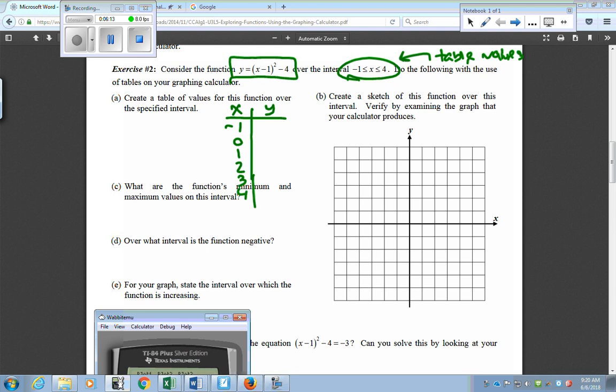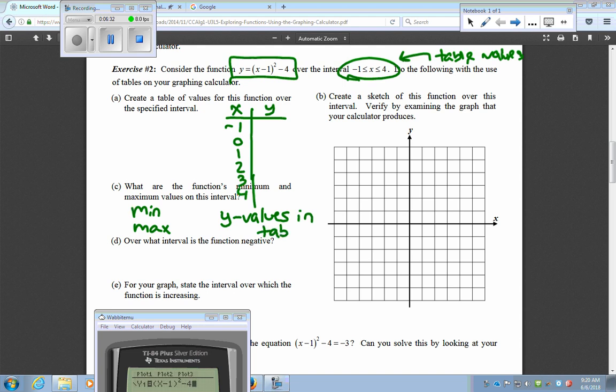For part c, they're asking for minimum and maximum values on this interval. What would you see for minimum and maximum? The min and the max, you really want to focus on the y values in the table. In this case, I'm going to take a second and pause this, and I'm going to come back with the graph on there. Like I said, I'd like you to do parts a and b, and then we'll talk about the rest of the parts together.